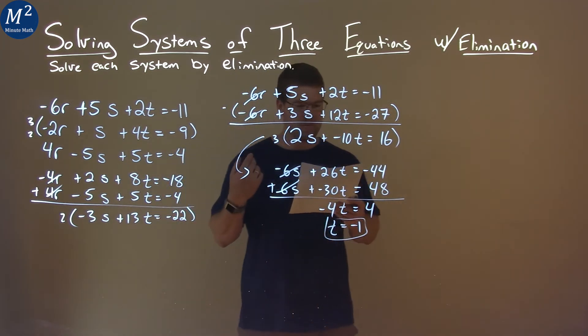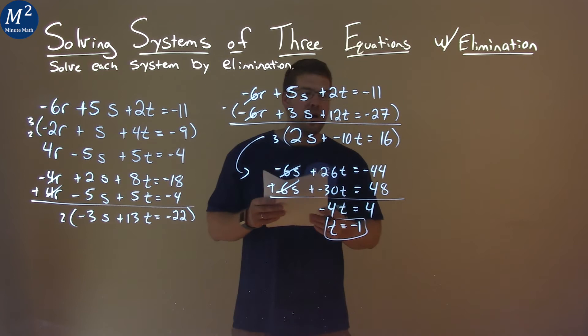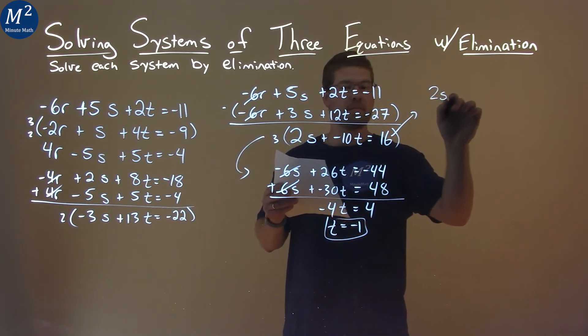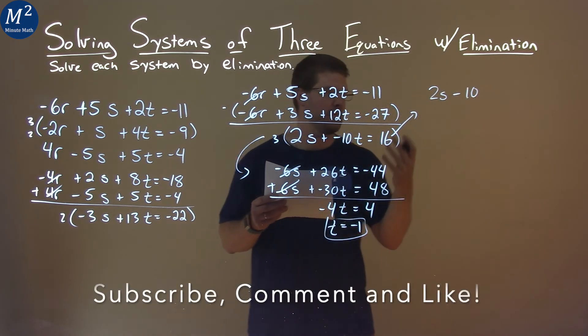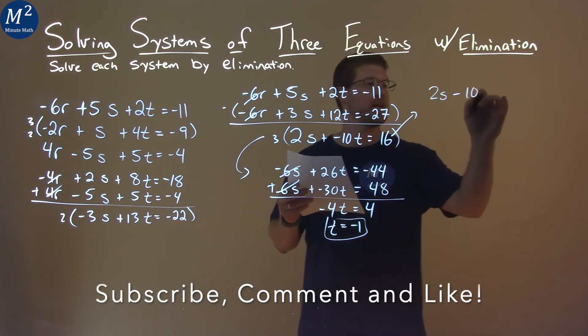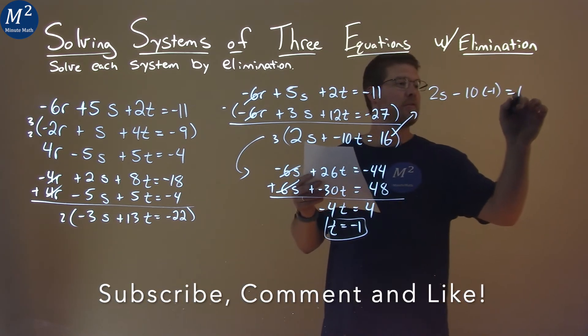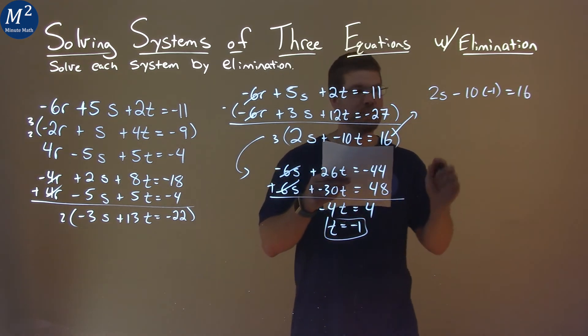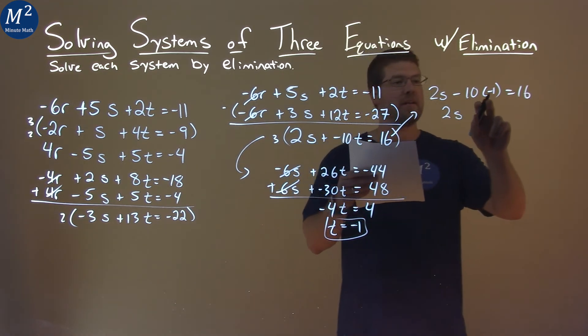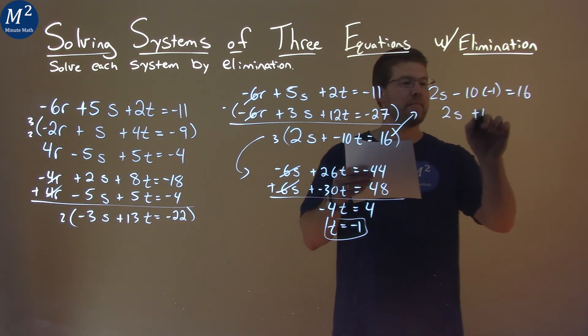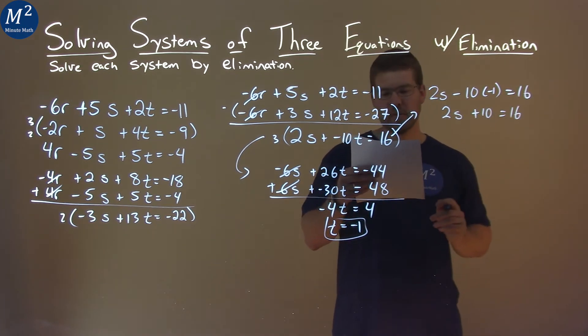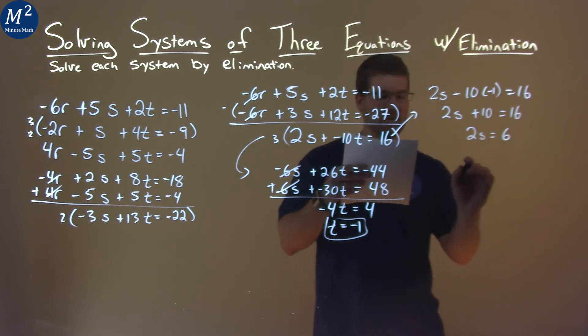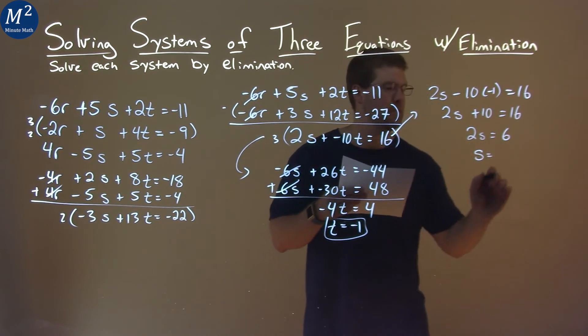So where can we go from here now to solve for our other values? If we look at this equation right here, the 2s minus 10t, instead of t I put negative 1 in, we substitute that in, equals 16. We now just have the variable s in this equation, so we can solve for that. 2s comes down, negative 10 times negative 1 is positive 10, equals 16. Subtract 10 from both sides. 2s equals 6. Divide both sides by 2, and s equals 6 divided by 2, which is 3.